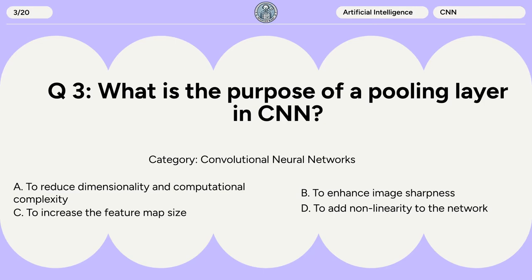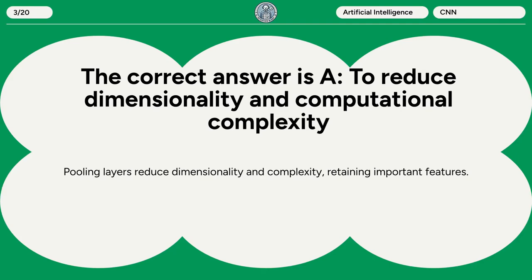Question 3. What is the purpose of a pooling layer in CNN? A. To reduce dimensionality and computational complexity. B. To enhance image sharpness. C. To increase the feature map size. D. To add nonlinearity to the network. The correct answer is A: to reduce dimensionality and computational complexity. Pooling layers reduce dimensionality and complexity, retaining important features.